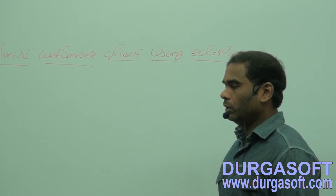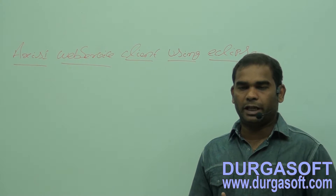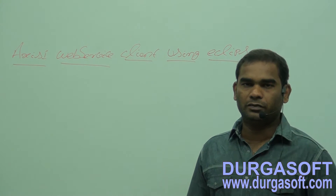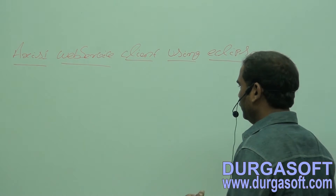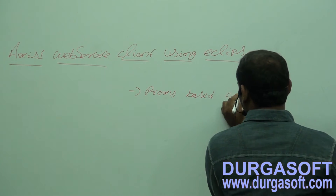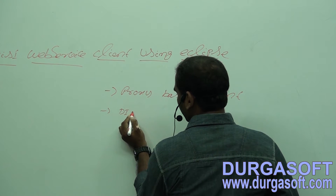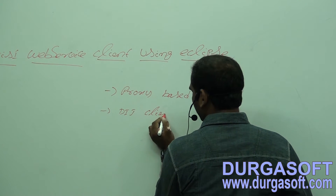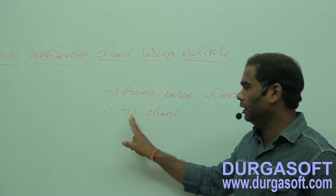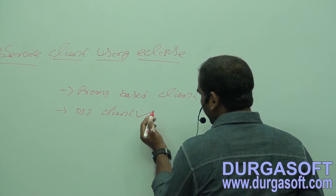Before discussing how to create an Axis1 web service client using Eclipse, we need to discuss how many types of clients we have in web services. We have two types of clients: one is proxy-based client, and the second one is DII client. DII stands for Dynamic Invocation Interface client.